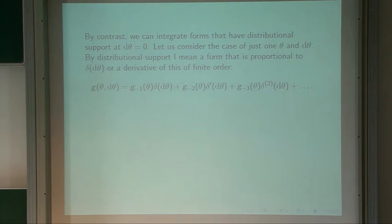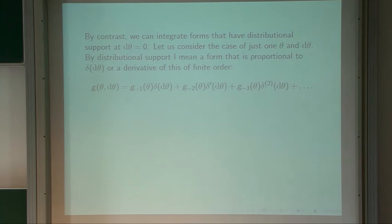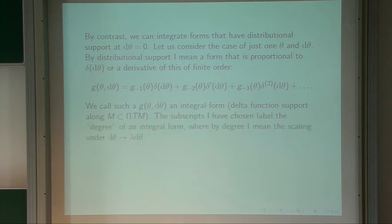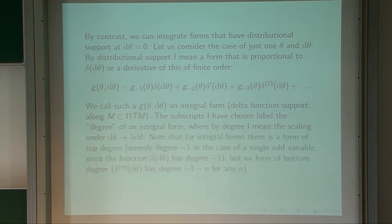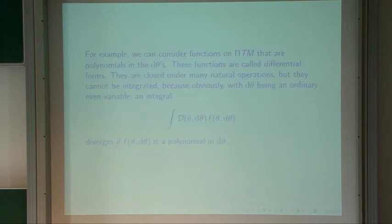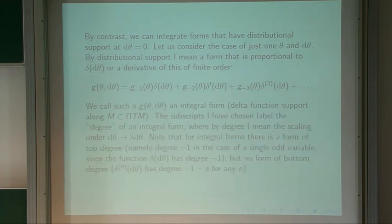I've written a subscript indicating the degree under the scaling that multiplies d-theta by a parameter lambda. Delta(d-theta) has degree minus one, delta'(d-theta) has degree minus two, and so on. The degree of these objects is a negative integer from minus one down to minus infinity. We call such a function an integral form. For integral forms there's a form of top degree — namely degree minus one in the case of a single odd variable — but there's no form of bottom degree. By contrast, for differential forms (polynomials in d-theta) there was a form of bottom degree (namely 1) but no top degree.